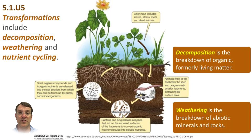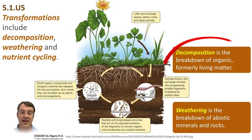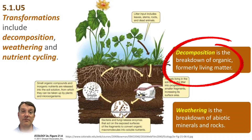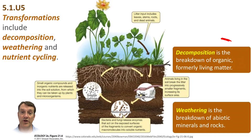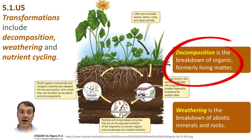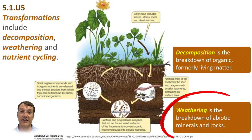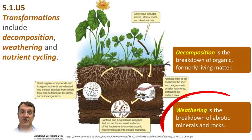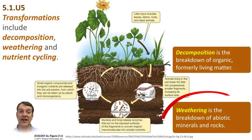Transformations in soil include decomposition, weathering, and nutrient cycling. Decomposition is the breaking down of organic matter from living organisms into smaller and simpler chemical compounds. Weathering is the very slow breakdown of parent rock — large pieces of rock into much smaller pieces — eventually getting as small as sand, silt, and clay.